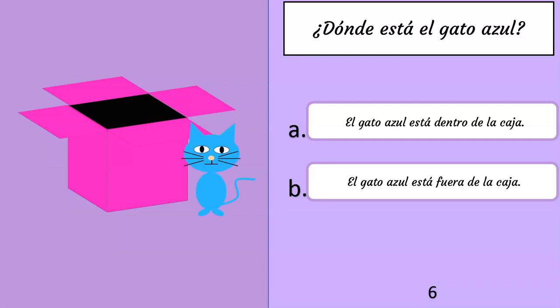¿Dónde está el gato azul? A: El gato azul está dentro de la caja. B: El gato azul está fuera de la caja. The correct answer is B: El gato azul está fuera de la caja.